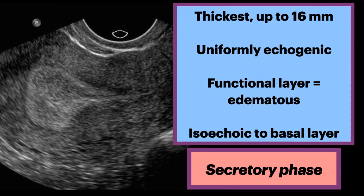In the secretory phase, the endometrium is at its thickest and can be up to 16 mm sometimes. It becomes uniformly echogenic as the functional layer becomes edematous and isoechoic to the basal layer. There is through transmission and posterior acoustic enhancement sometimes. There should be a regular contour with no evidence of an endometrial mass or distortion. Corpus luteum are present during the secretory menstrual phase.